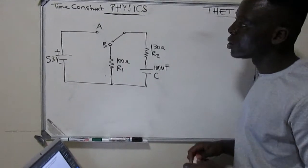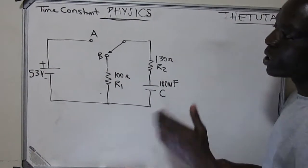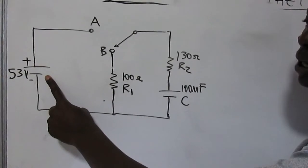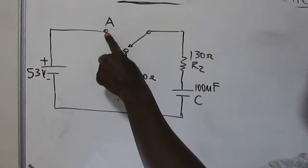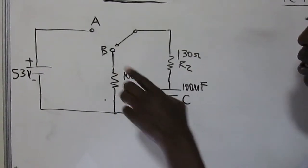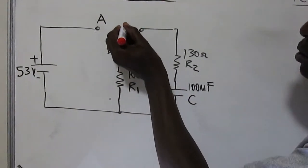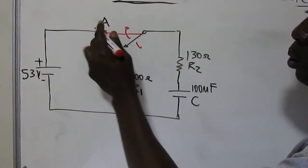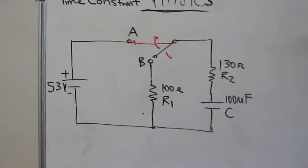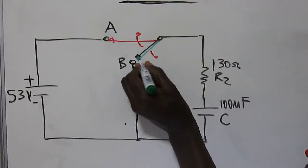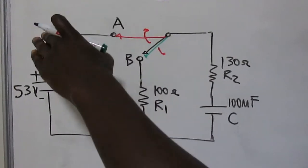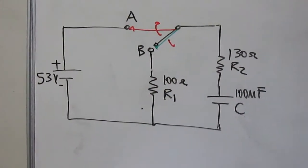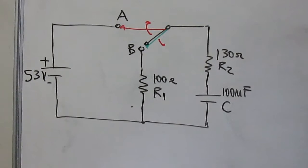Let's look at the charge and discharge when voltage is involved. There is a 53-volt battery given to us. There is position A, position B, and a selector switch — a switch that can move up and down, connecting to A or B. When connected to A, current starts moving on that side; when moved back, the capacitor starts discharging.